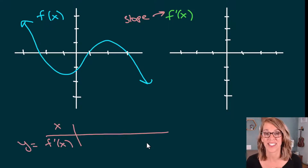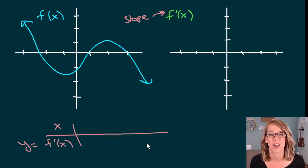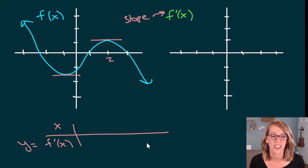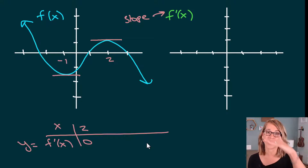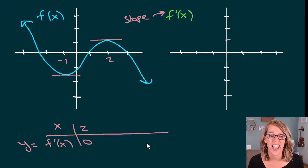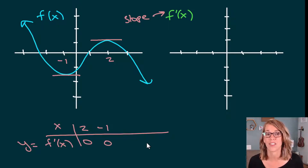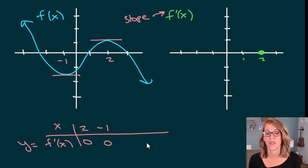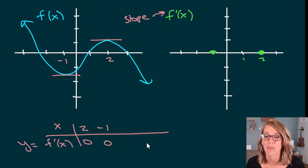The easiest ones to find are where the derivative is equal to 0. The derivative equals 0 where I've got a flat tangent line. So I've got a derivative equal to 0 at x = 2, and I also have a derivative equal to 0 at x = -1. So I can go to the graph of my derivative and plot the point 2 comma 0 and the point negative 1 comma 0.